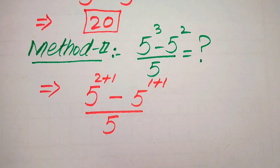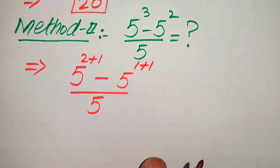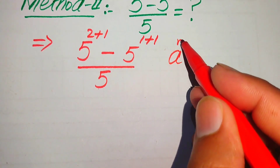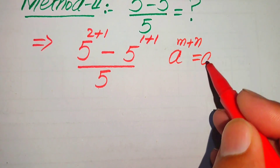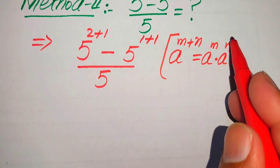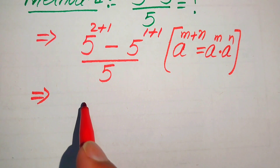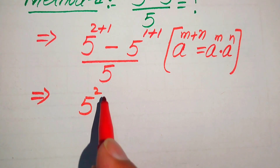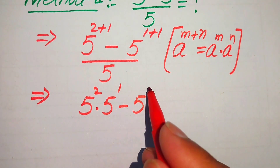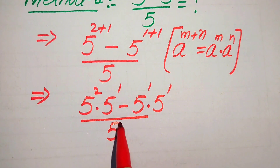We use another exponent law: a to the power of m plus n equals a to the power of m multiplied by a to the power of n. Applying this law, we break both exponents to get 5 squared times 5 to the power of 1, minus 5 to the power of 1 times 5 to the power of 1, all divided by 5.